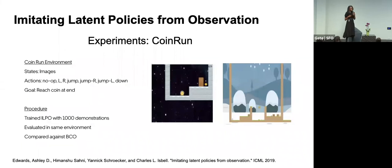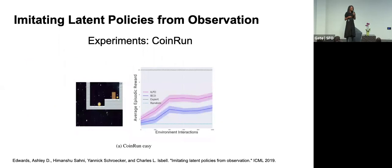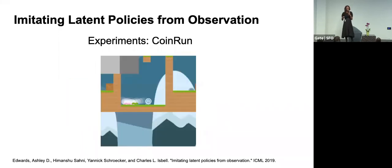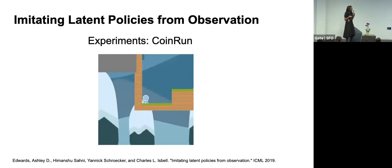We also tried this in Coin Run — an agent navigating to a coin — in two different environments. We do better than behavioral cloning from observation in both. One nice thing about our approach is that it enables learning some behavior zero-shot: we learn our latent policy from video, then relabel with real world actions. Sometimes the network randomly initializes latent actions to the correct real actions, so the agent achieves decent performance at step zero and solves the task by step 200.